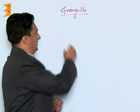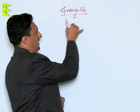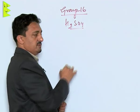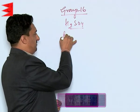In group 16, in the last we have sulfuric acid H₂SO₄. Let us see first its preparation.